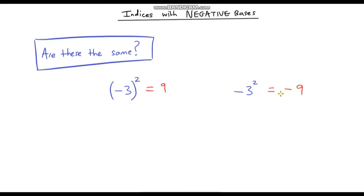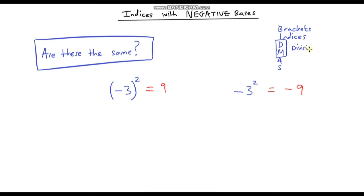It all comes down to our order of operations. Here in the UK we use the acronym BIDMAS — in America PEMDAS is commonly used. The B stands for brackets, which is the first thing we do when evaluating an expression. Then we have indices. Then D and M — division and multiplication — which have the same level of priority. And finally A and S — addition and subtraction — which also share the same level of priority.